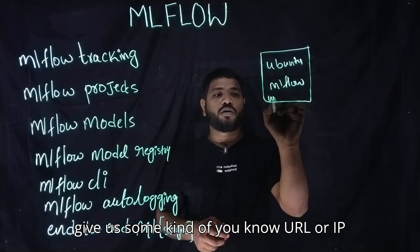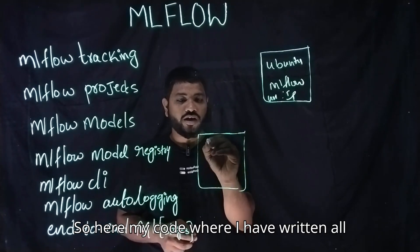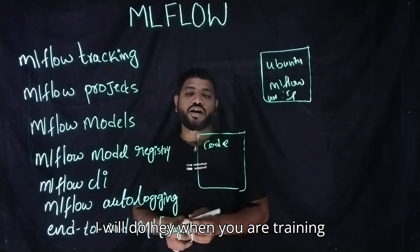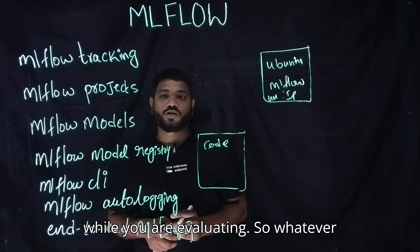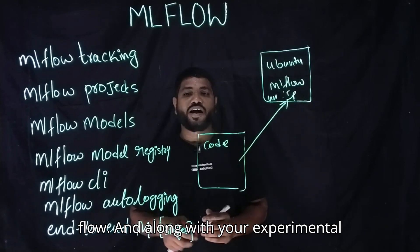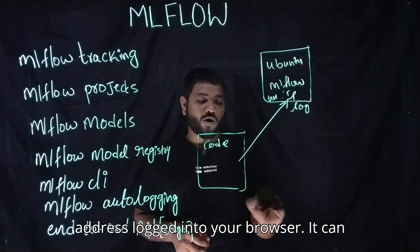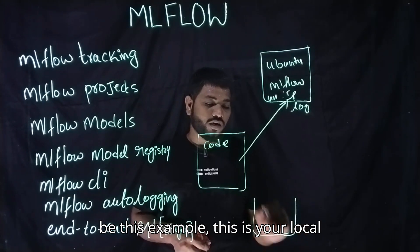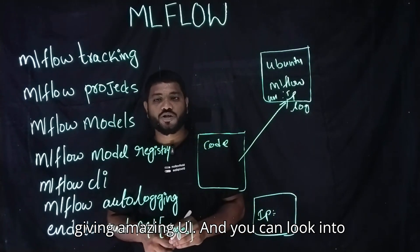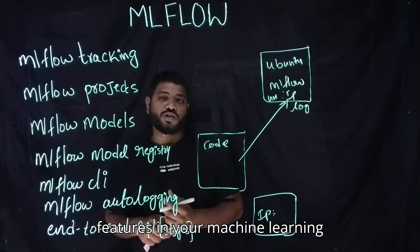MLflow will give us a URL or IP address. What I will do: I have my source code where I have written all about my machine learning lifecycle — data collection, pre-processing, and all. While I am doing training, whatever metrics have been driven, and while you are evaluating, whatever metrics have been driven from my source code — it is going to call this particular IP address of my MLflow along with your experiment ID, and it will go and log all your metrics there. MLflow is giving an amazing UI so you can get that IP address loaded in your browser and see all the metrics at that particular IP address. You can look at the whole statistical way of logs and compare which experiments have been giving better features in your machine learning lifecycle.